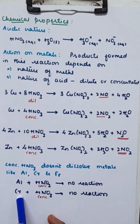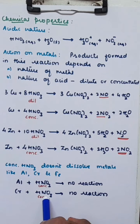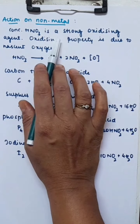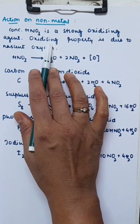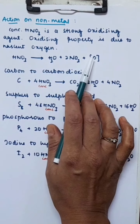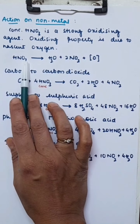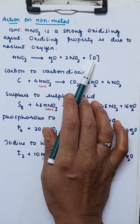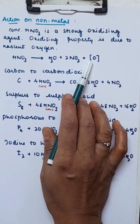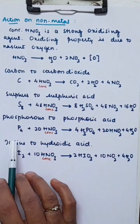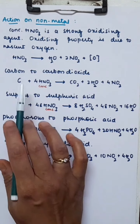Now let's see its action on non-metals. Concentrated nitric acid is a strong oxidizing agent. The oxidizing property is due to nascent oxygen (singlet oxygen). Nitric acid undergoes decomposition to give water, nitrogen dioxide, and nascent oxygen, and it is this nascent oxygen which is responsible for all the oxidizing property.